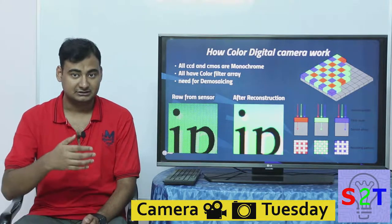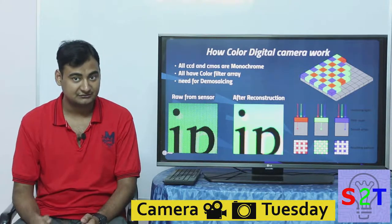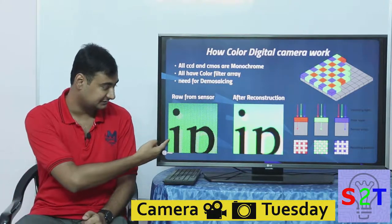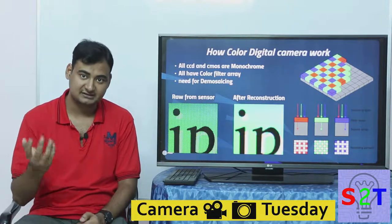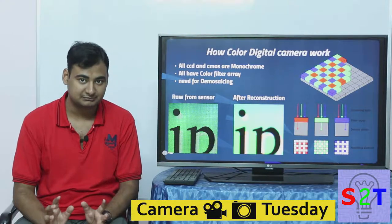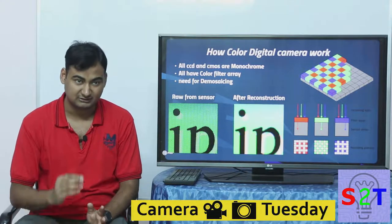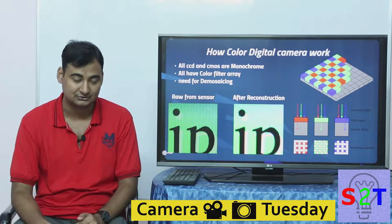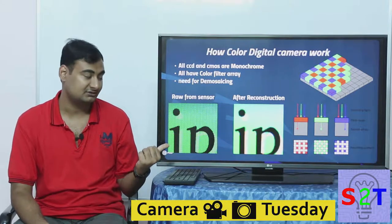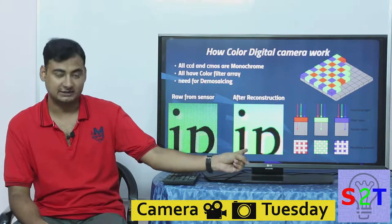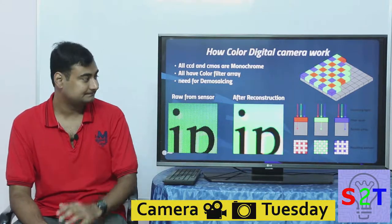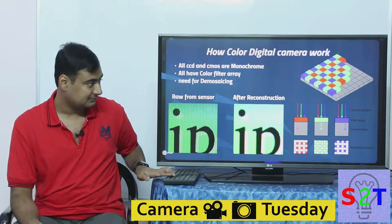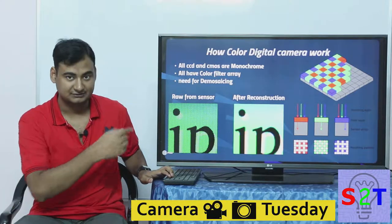The raw image from the sensor looks pixelated, then we do the processing — this is done in-camera, essentially at the sensor level. The first processor it goes through takes care of this, giving us the final image. This is essentially how a black and white camera works: we simply remove the color filter.